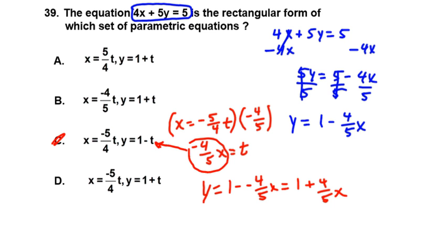Let's go on to answer choice D. If we take, in this case, x equals negative 5 fourths t. And we want to go ahead and solve for t. Same thing we did earlier. By multiplying by negative 4 fifths, we end up with negative 4 fifths x equals t.